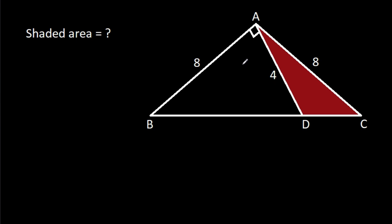In this video, we have been given that AB is 8, AC is 8, AD is 4, and angle BAD is 90 degrees. We have to find the shaded area.